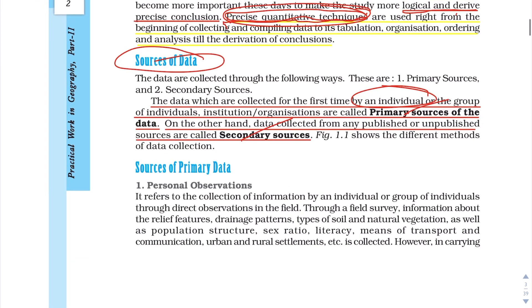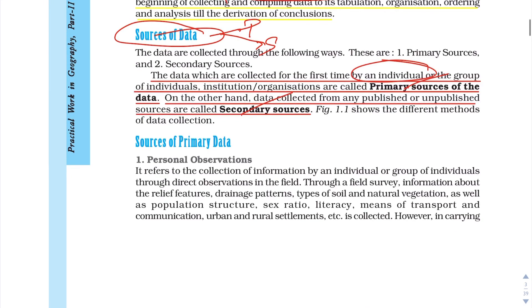What is the source of data? There are primary sources and secondary sources. In primary sources, if a person or a group first collected data, they produce primary data.